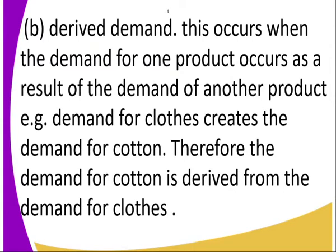Number two, we have derived demand. This occurs when the demand for one product occurs as a result of the demand for another product. For example, demand for cloth creates the demand for cotton. When the demand for cloth increases, it creates room for the demand of cotton to also increase. Therefore, the demand for cotton is derived from the demand for cloth. The more we need the cloth, the more cotton gets demanded.